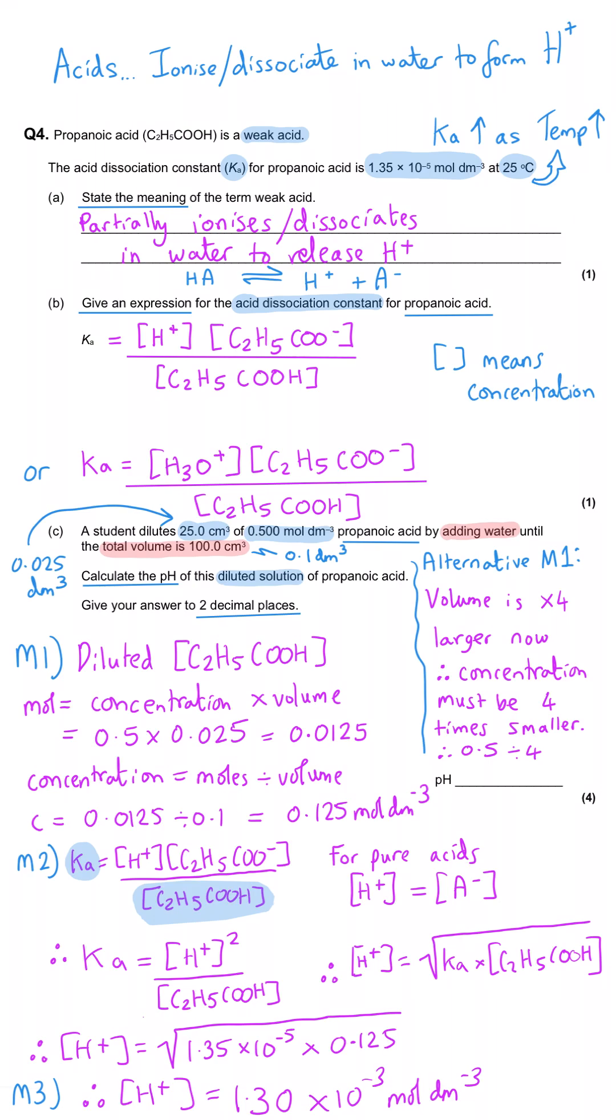And last of all, pH is negative log of hydrogen ion concentration, so negative log of what we've just got for our answer, and that gives us a pH of 2.89 to two decimal points. You must always report pH values to two decimal places, and they have signposted it here that that's a requirement, but they don't always.